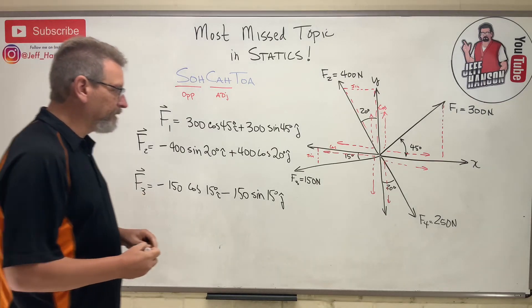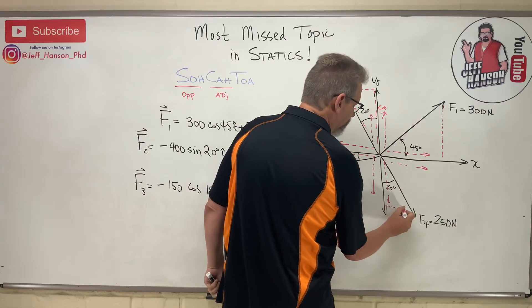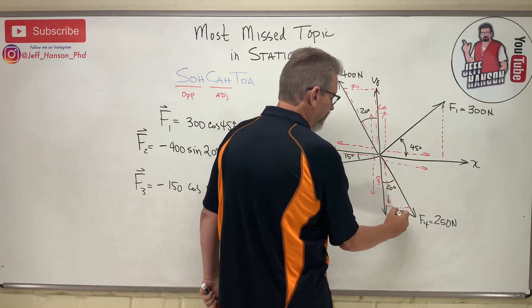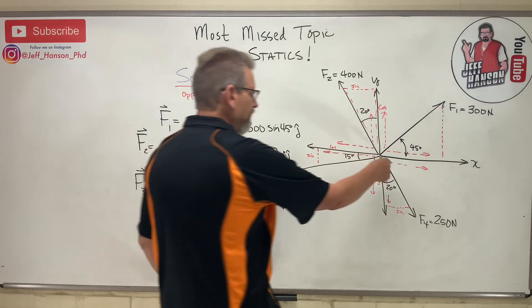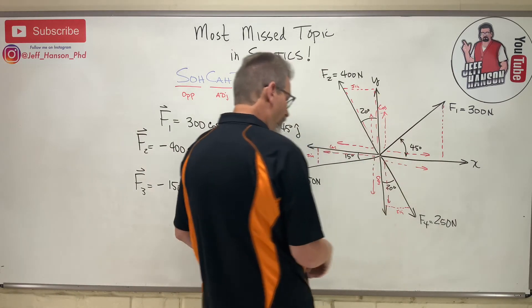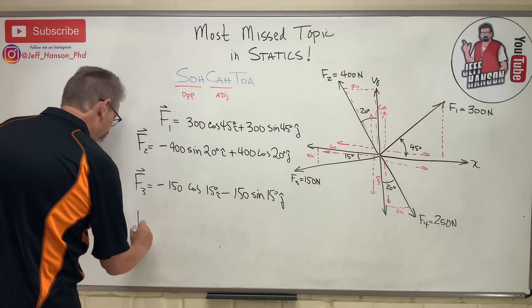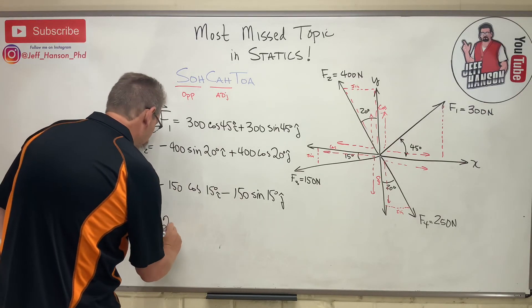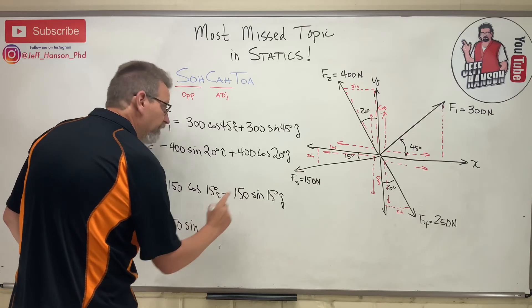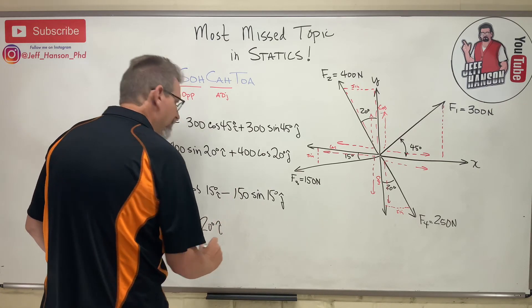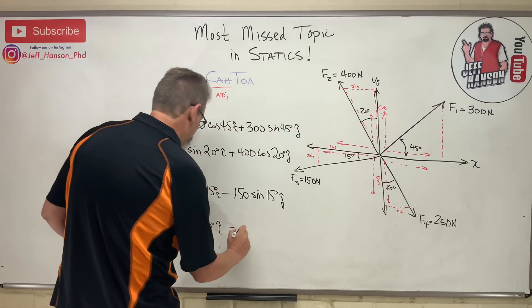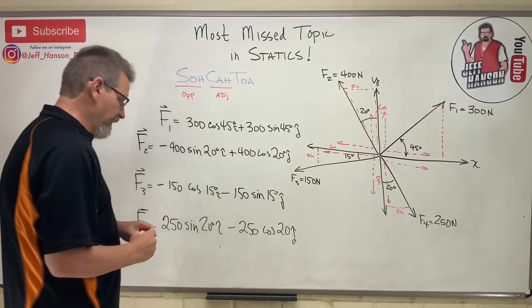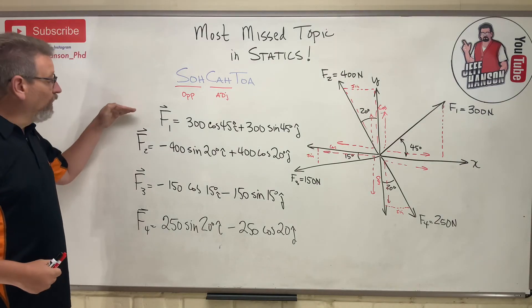Again over here, next vector. Think about a triangle. The adjacent side is here, so this would be cosine. The opposite side over here, that's sine. And what do I have? I have in this case a positive x but a negative y. So F4: positive x. What is x going to be? X is the sine, isn't it? 250 sine of how many? 20 degrees i hat. And then the y is negative, going downhill, so minus 250 cosine 20 j hat. And that's it.